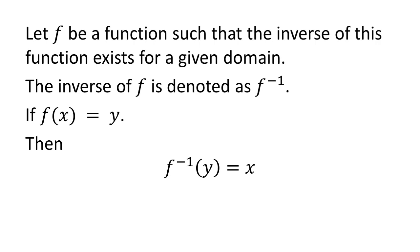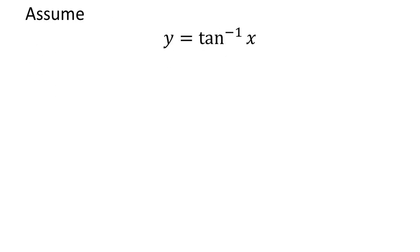We will apply these properties to solve cosine of arc tangent of x. To find the value of cosine of arc tangent of x, let's assume y is equal to arc tangent of x. As arc tangent is the inverse of tangent, this means tangent of y is equal to x.